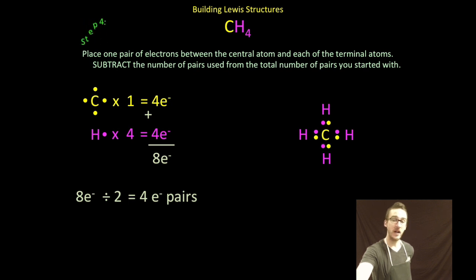Now I've color coded them specifically so that you can recognize that one of the electrons in that pair is coming from the central atom, carbon, and one of the electrons is coming from the terminal atom, in this case hydrogen.